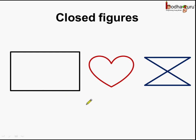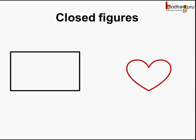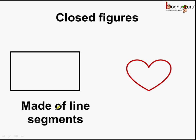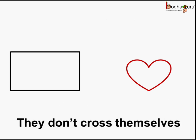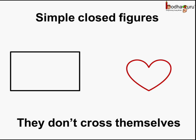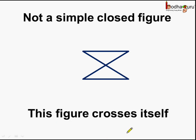Now, all of these are closed figures. Is there any difference between these? Comparing these two, this is made of line segments and this is made of curves. But there is one similarity — they do not cross themselves. Hence, they are called simple closed curves or simple closed figures. And coming to this, it is not a simple closed curve as this figure crosses itself.